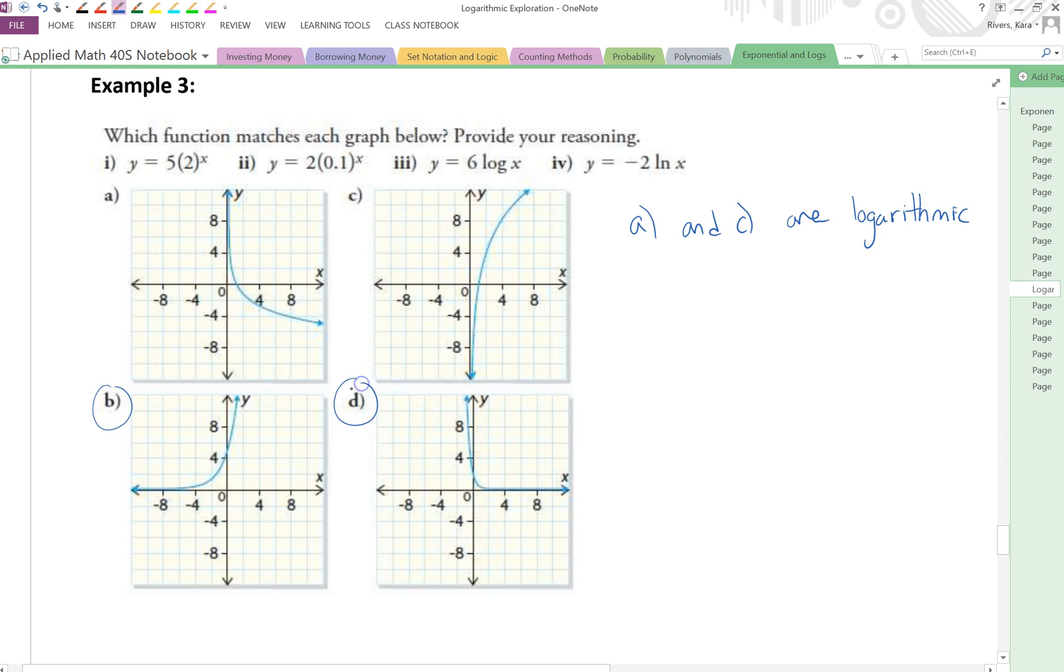And then that means that our other two graphs, B and C, they don't cross the x-axis, but they do cross the y-axis. So that means graphs B and D are exponential.